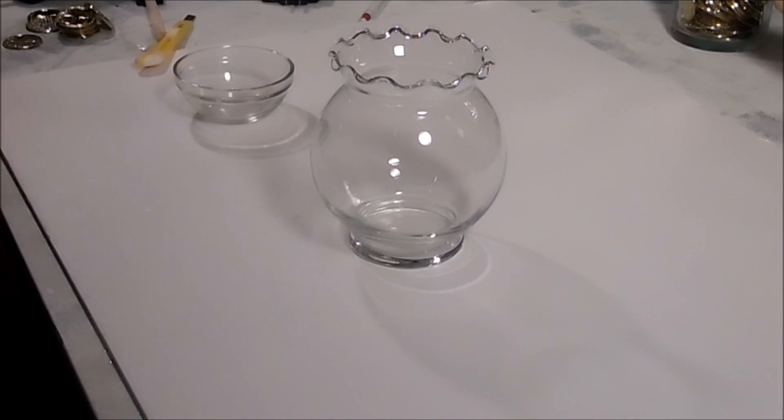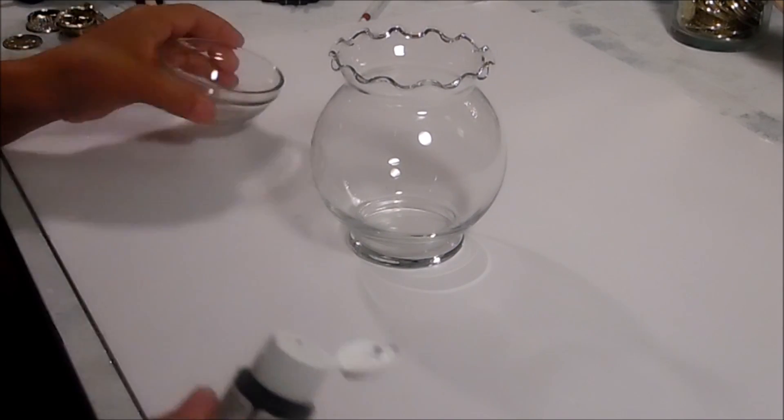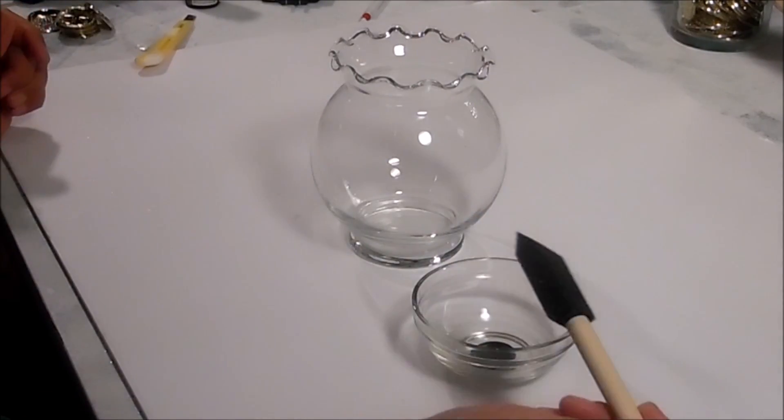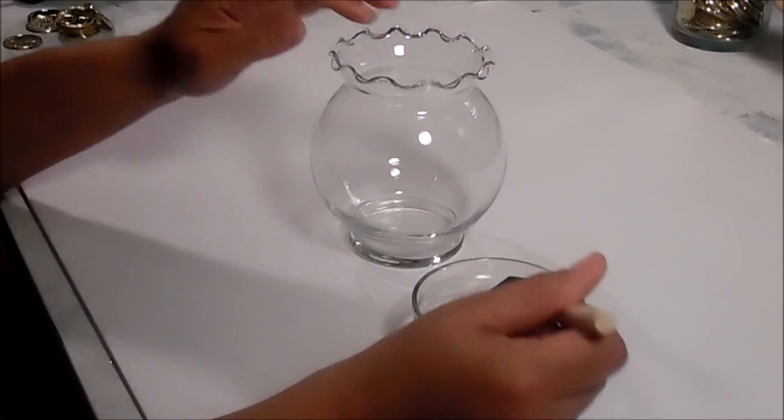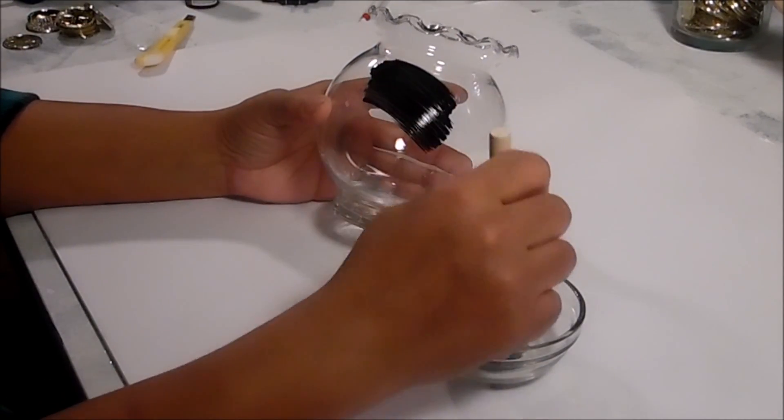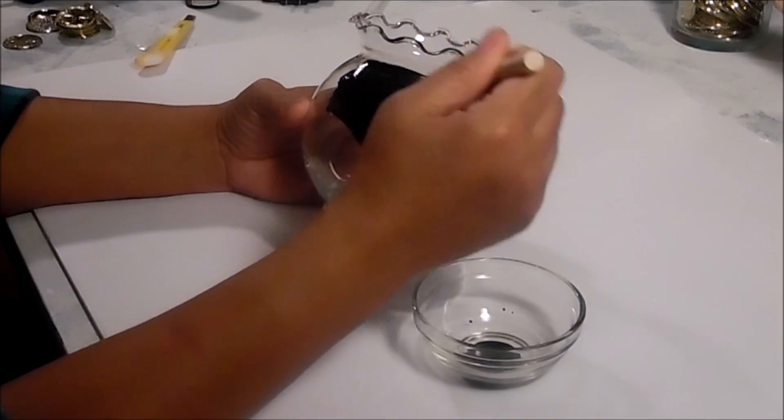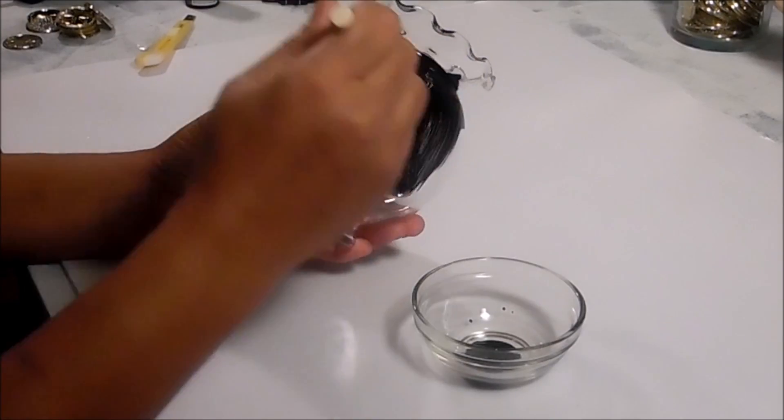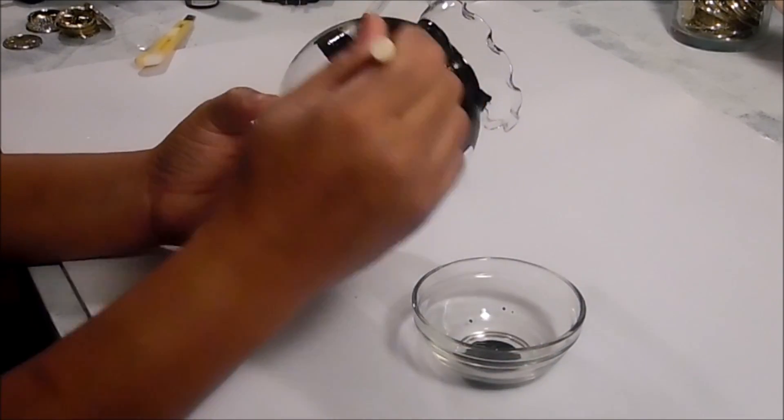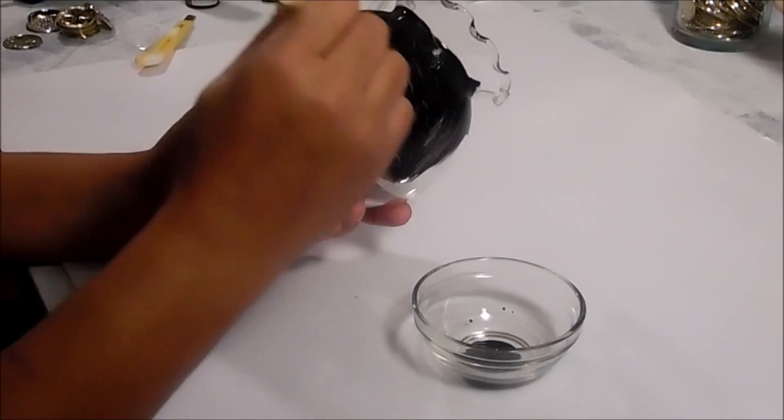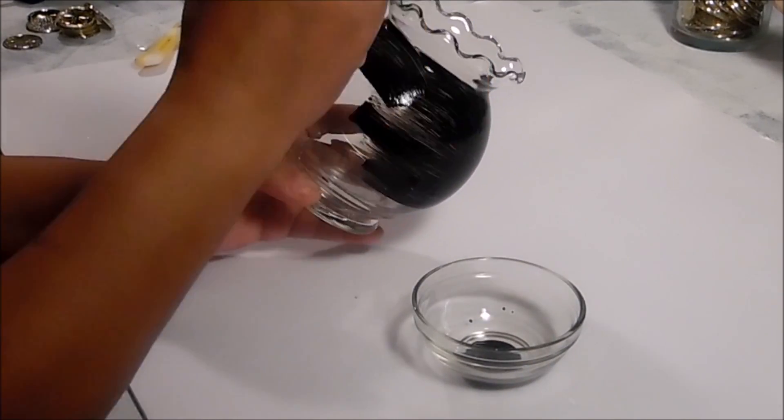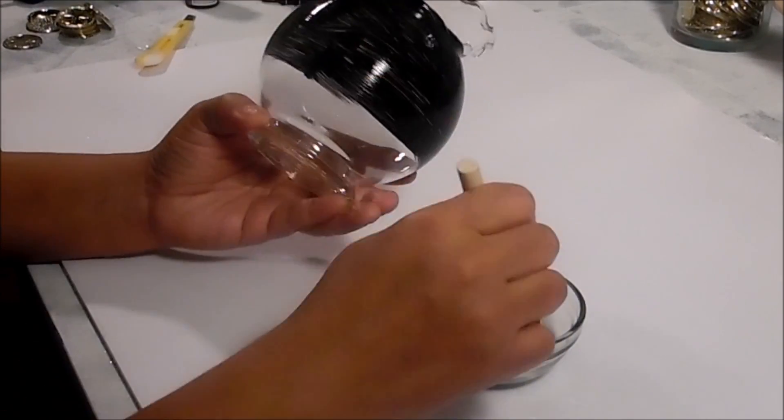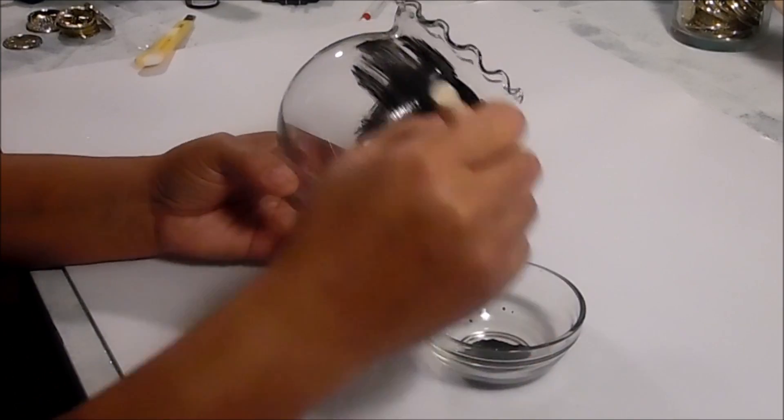So what I want to do is just take some of this paint, put it in this little container. I'm going to use a foam brush, but you can use a regular brush. And I'm just going to paint the outside black. So I'm just going to get this first coat on here.